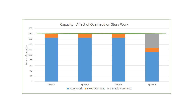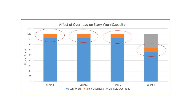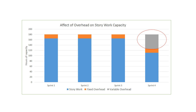This chart shows how the three types of work can affect your capacity. The green line shows the maximum capacity for the team. The areas of the bar in orange represent the fixed overhead that affects every sprint to about the same extent, allowing for consistent capacity for work on the product. The blue bar represents the story work, showing how much work is being done on the product. The gray area represents variable overhead, which directly affects the height of the blue bar.